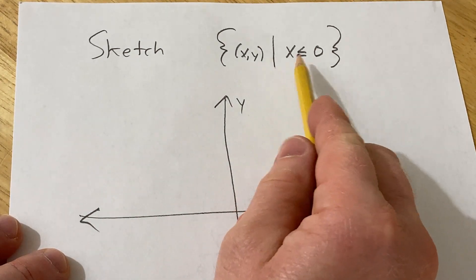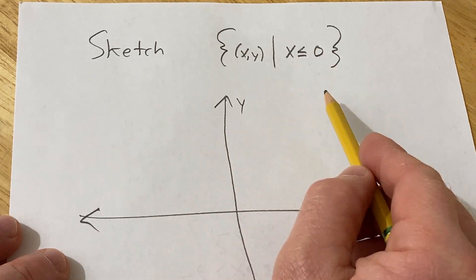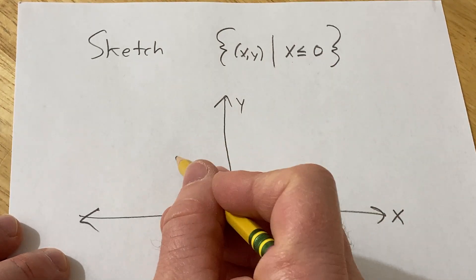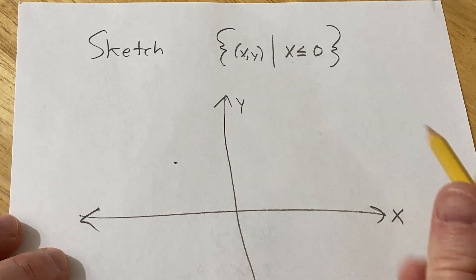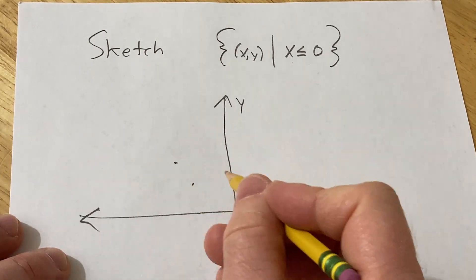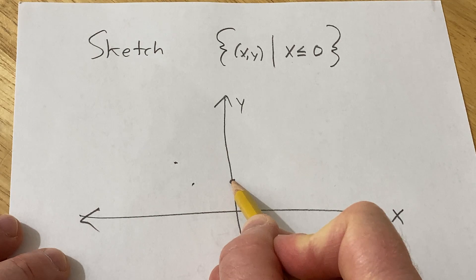And it's all of the ordered pairs such that x is less than or equal to zero. So basically this would be a point in this set, likewise this would too, likewise this would too because x is equal to zero in this case.